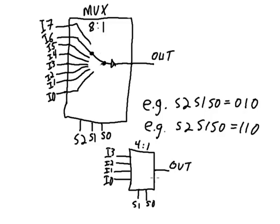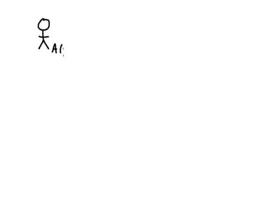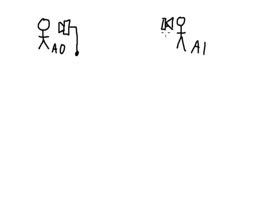Now the question is, where are multiplexers used? I'll show you a couple of simple examples. This is actually sort of an analog type of example, but the control is still going to be digital. Let's say we've got a person here, A0, and another person over here, A1, and these two people want to have a communication with each other over some kind of telephone or communication link.